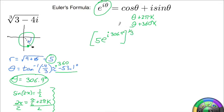So here we're going to use laws of exponents. We're going to take the cube root of 5, and then power to a power we're going to multiply, which in essence means we're going to take 306.9 and divide it by 3, and because of that we're going to add on that 360 k before we start dividing by 3.